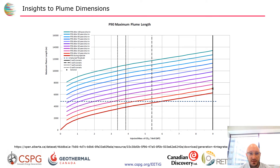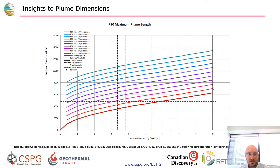A key takeaway for our workflow going forward is understanding how big a plume can get. The simulation report contains a multitude of scenarios. On a three-well injection case injecting nine million tons of CO2 per well, the high-end plume could be seven kilometers in length per well. The P50 is less, but this gives us a flavor for how much rock volume we need in an aquifer when evaluating it for CO2 sequestration.